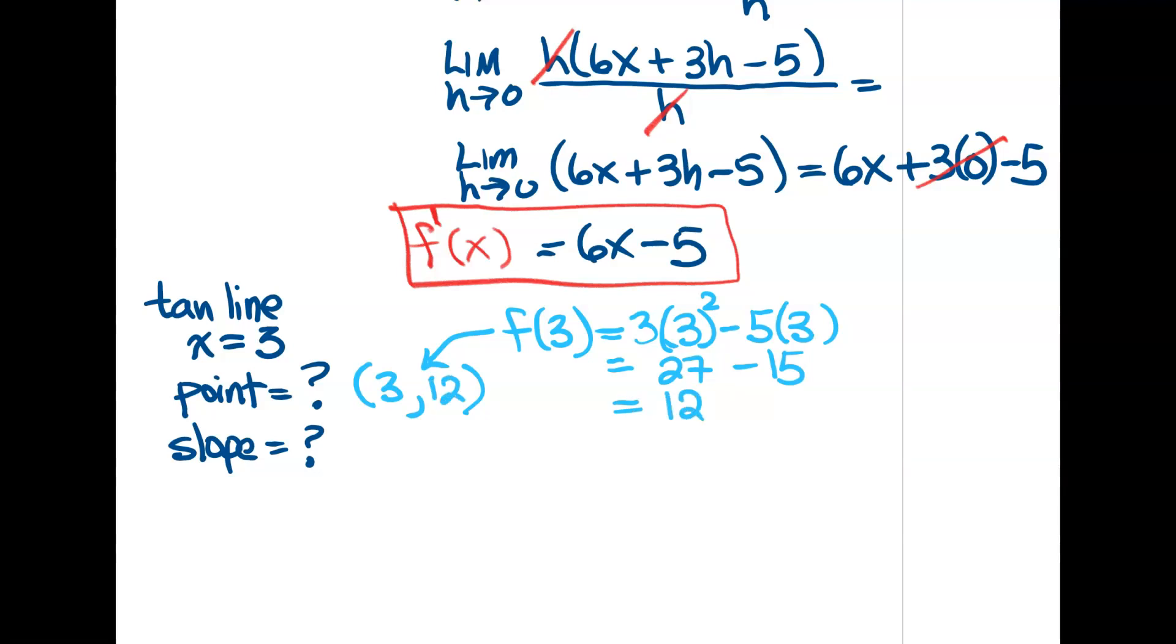Okay, here's my ordered pair. Here's the point I need, 3, 12. Now the slope you need, the slope of this tangent line, I have a formula for the slope. That's my derivative.